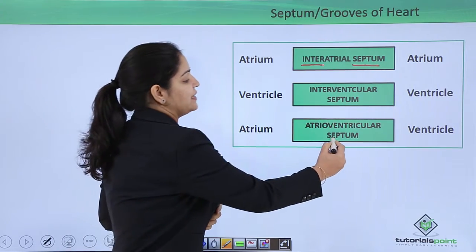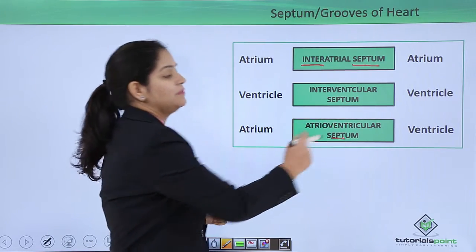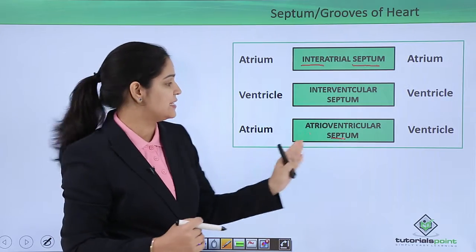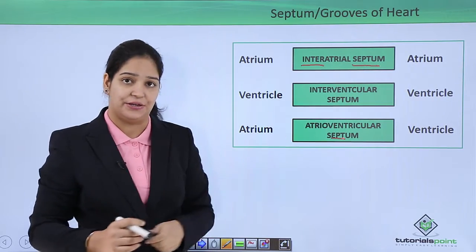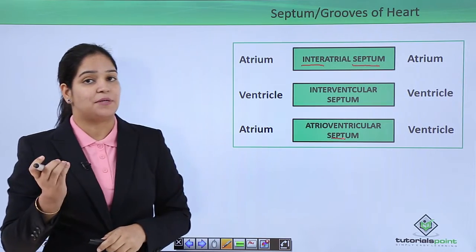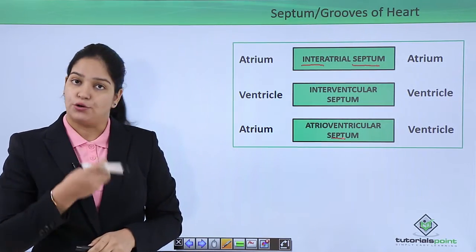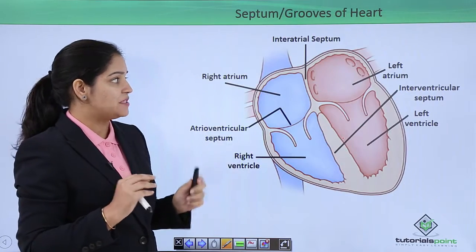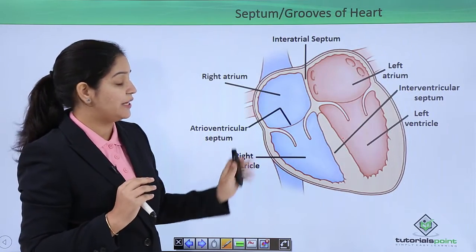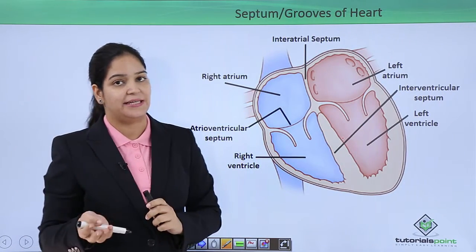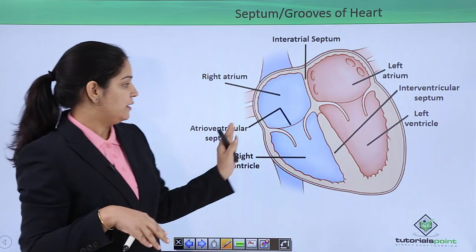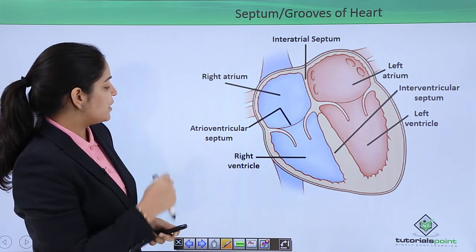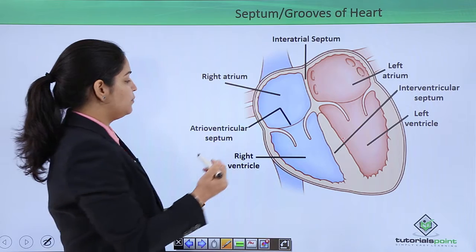In the same way, the separation between the atrium and ventricle is the atrioventricular septum. This septum is very important because it helps the heart keep deoxygenated and oxygenated blood separate.